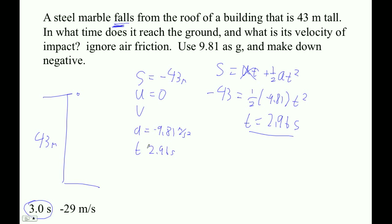2.96 seconds. And then the velocity of impact you could get with, I guess we could do it with V squared is U squared plus 2AS, right? So V squared is zero squared plus 2 times negative 9.81 times negative 43 meters, okay? And then negatives go away, so we can take the square root. Square root of 2 times negative 9.81 times negative 43.